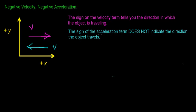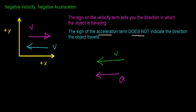The acceleration term or sign does not indicate the direction the object is traveling. All the acceleration vector tells you is the direction in which the velocity of the object changes. For example, if an object is traveling in one direction and accelerates in that same direction, we said in the last video that when the velocity and acceleration vectors point in the same direction, the object is going to speed up.